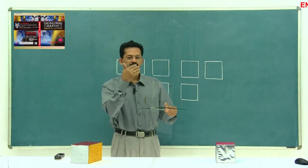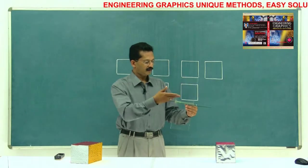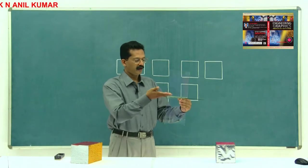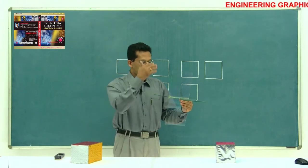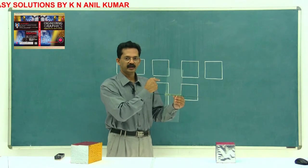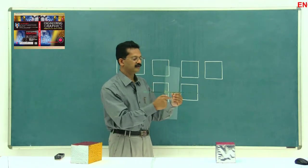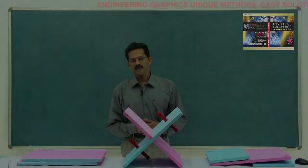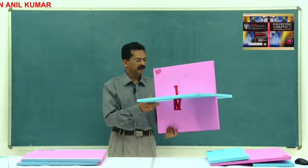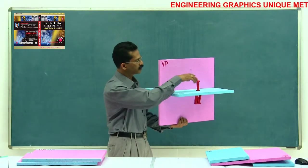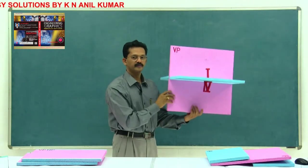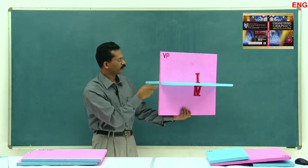These are imaginary planes — meaning they are transparent. The first plane divides the universe into upper and lower halves, and the second vertical plane divides it into two more halves. Together these two planes divide the entire volume into four quadrants: the first quadrant, second quadrant, third quadrant, and fourth quadrant — numbered in anti-clockwise direction.